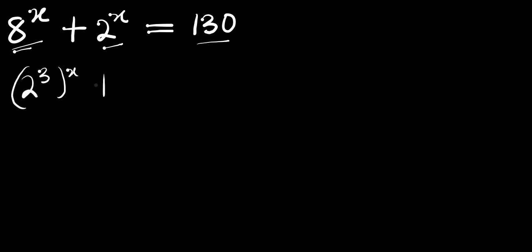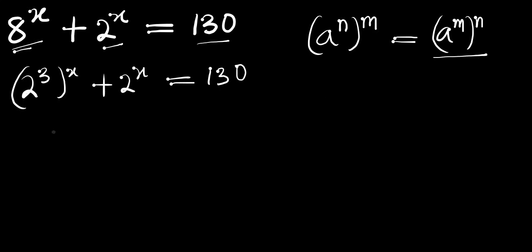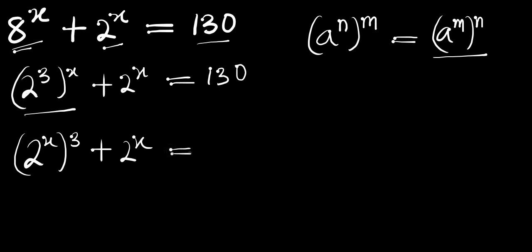So we have 2^3 power x plus 2^x, and this equals 130. Now we make use of the identity: a^(n·m) equals a^(m·n). We are going to apply this identity, so we have 2^(x·3) plus 2^x equals 130.